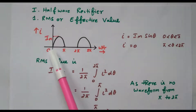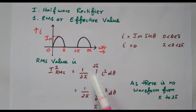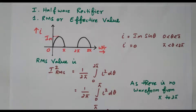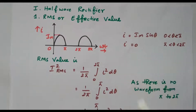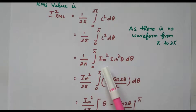But here the current is available only from 0 to π. So we can change the limit to 0 to π, since from π to 2π the current is not available — there is no waveform. So the limit is changed from 0 to π. Now we substitute I² — the I value is Im·sinθ — giving (1/2π) ∫₀π Im²·sin²θ dθ.